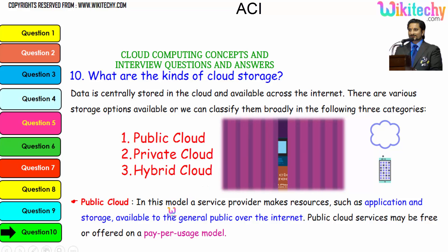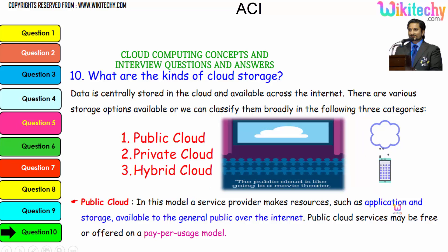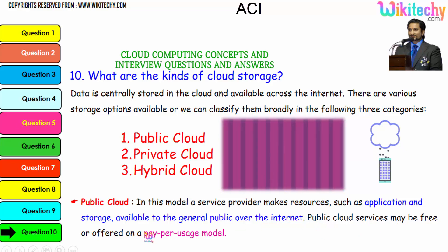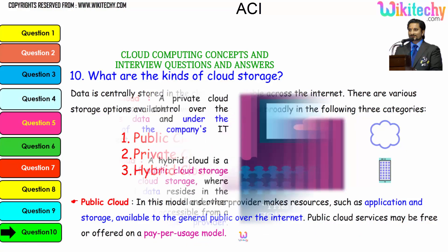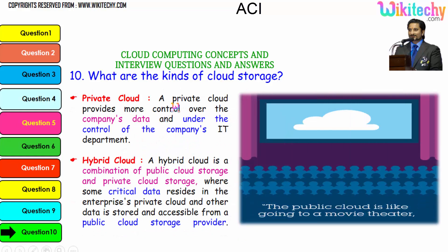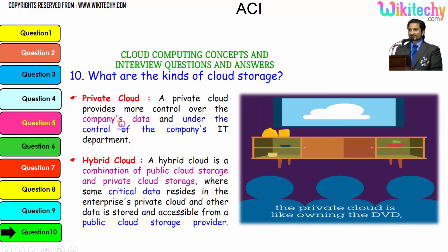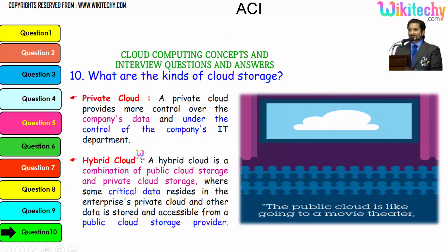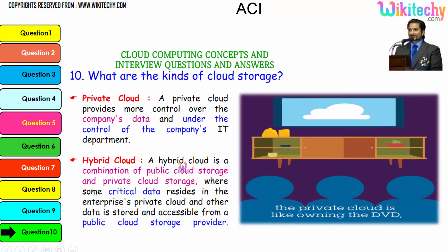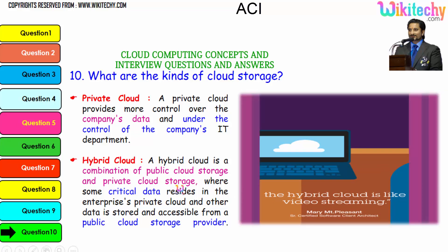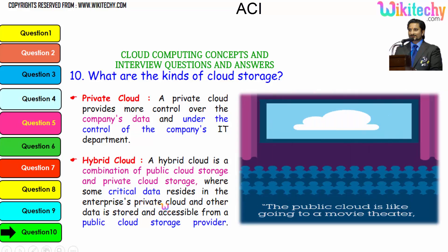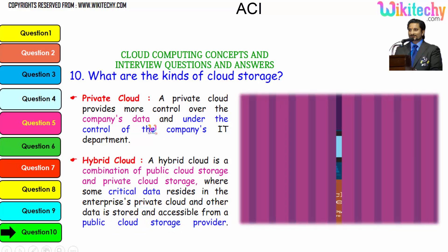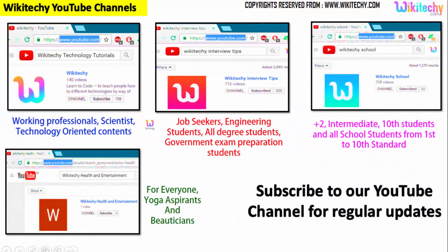In the public cloud model, a service provider makes resources such as applications and storage available to the general public over the internet. Services may be free or offered on a pay-per-usage model. A private cloud provides more control over the company's data, managed under the company's IT department. A hybrid cloud combines public and private cloud storage — critical data stays in the private cloud while other data is stored and accessible via a public cloud provider.